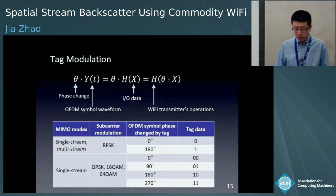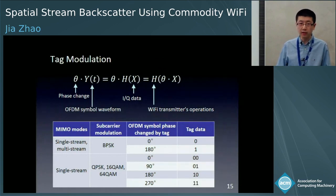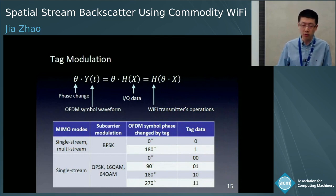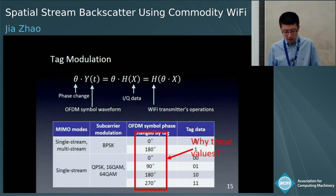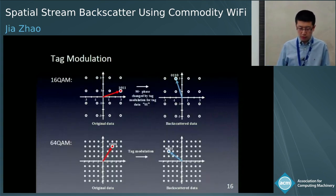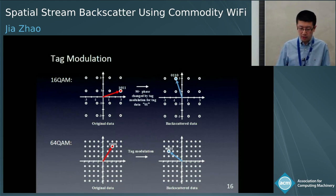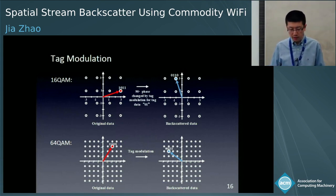The Wi-Fi transmitter operations are linear transforms over the IQ data vector space. This means that a phase change in the time domain of OFDM symbol waveforms can be converted to a phase change on the IQ constellation points. This figure shows the phase change values that can be used to convey tag information. We use these specific phase change values because only the minimum step of 90 degrees can ensure the IQ data after tag modulation still falls in the same constellation, enabling commodity Wi-Fi devices to decode the tag information.